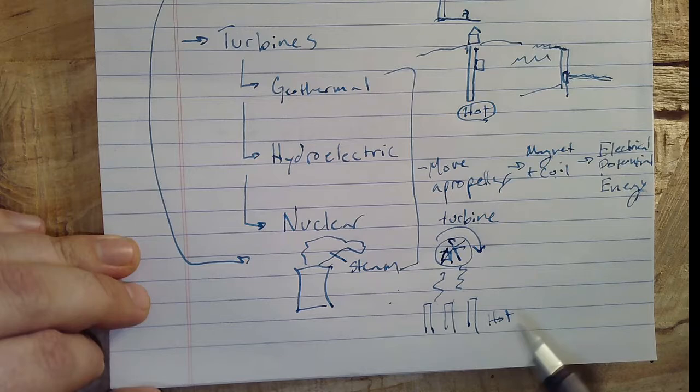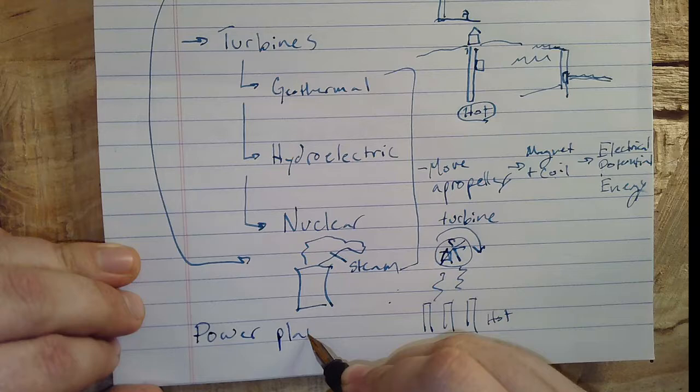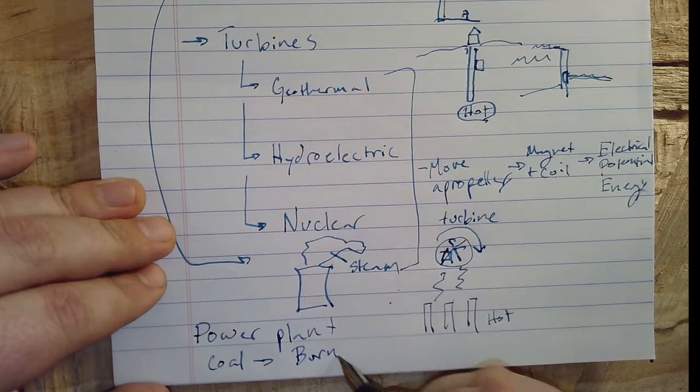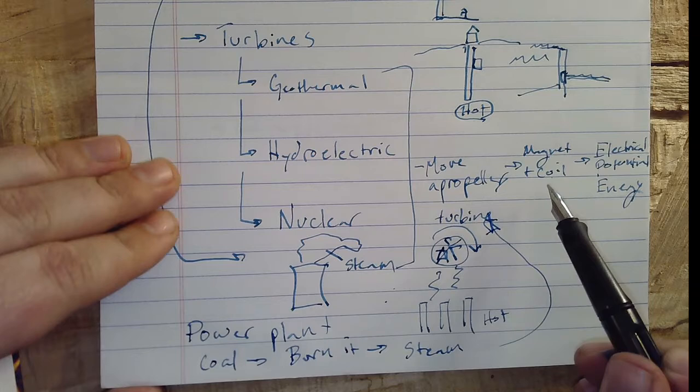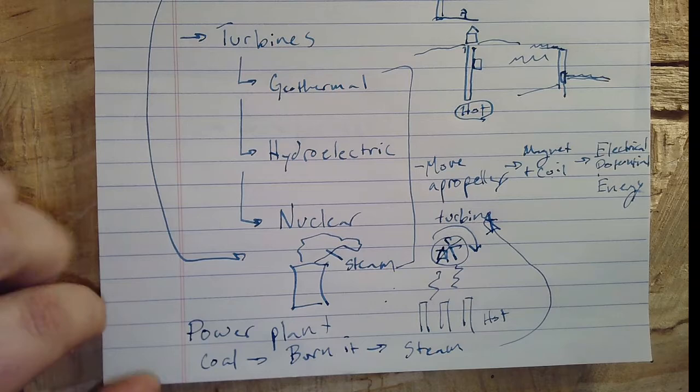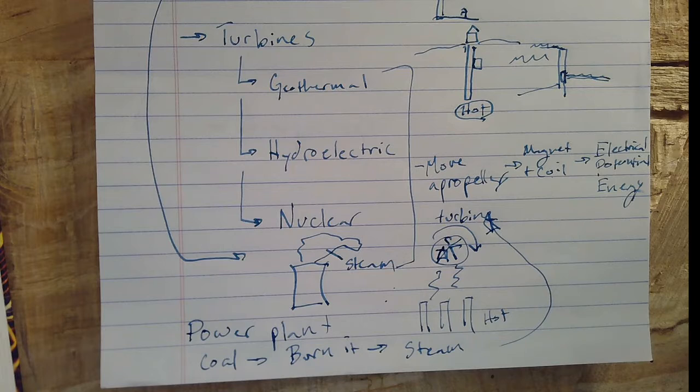Even inside of a regular old power plant, this is the exact same thing. So in a regular power plant, what you do is you take coal, you burn it to heat up some water to make steam. And then you know what the steam does? It moves a turbine, which makes a magnet and a coil, to make some electrical potential energy. So in a normal power plant, and that is the power that's in your house right now, at one point that was coal.